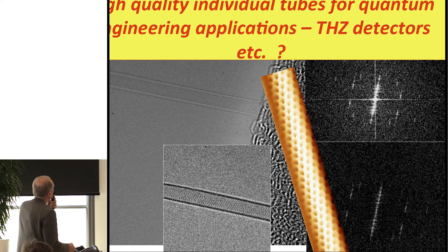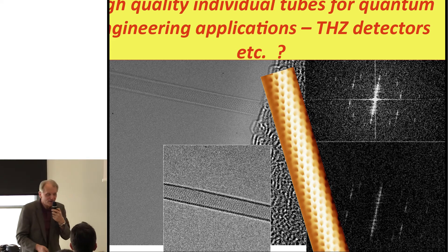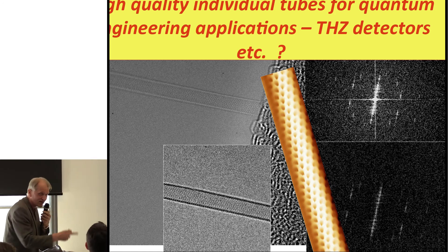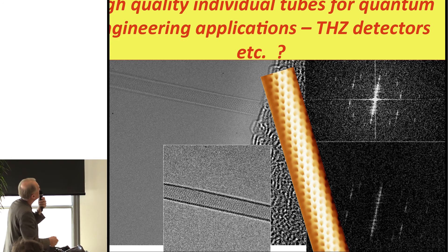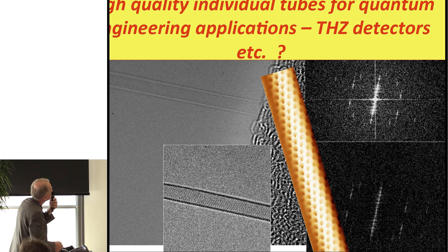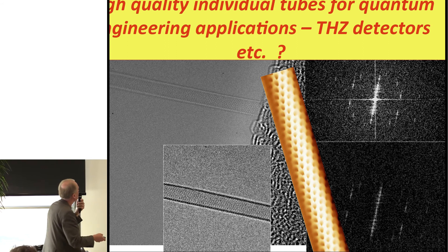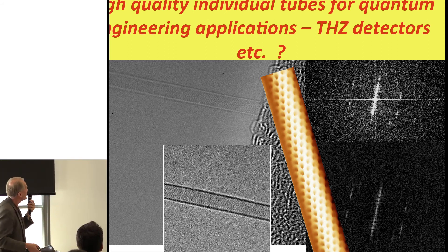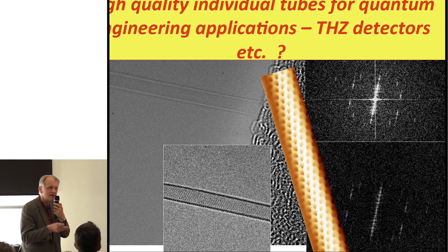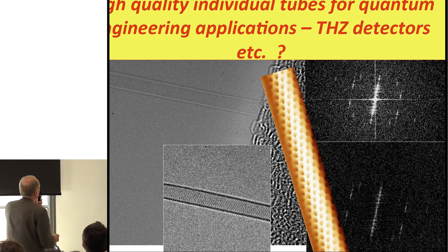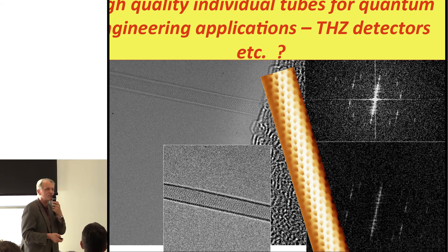But what about quantum engineering? I don't know — maybe we could use nanotubes for something. With nanotubes, we have learned to land them and understand their structure. Whether they could be used in quantum computing, I'm not sure, but I'm happy to collaborate with quantum physicists working on that. For applications in general, I would recommend carefully selecting your application and starting with the simplest possible one. That's my last word. Thank you very much for your attention.